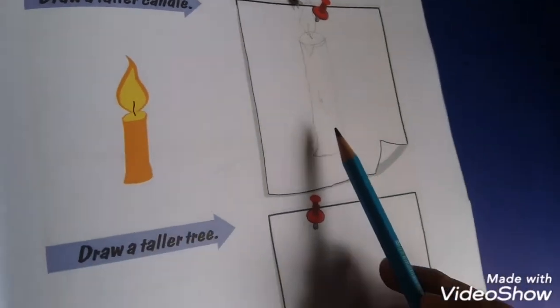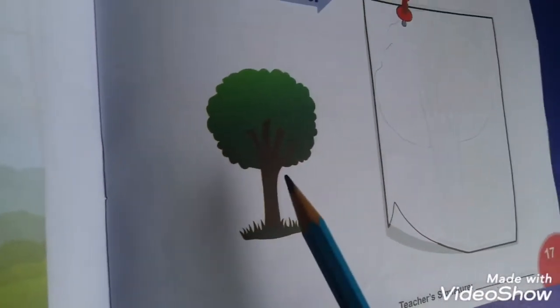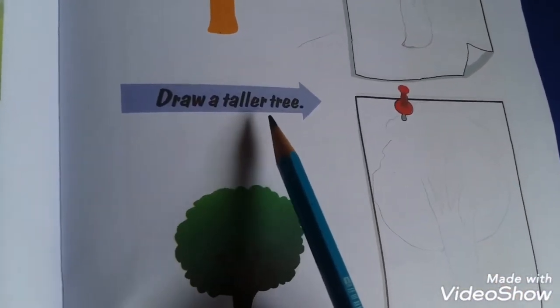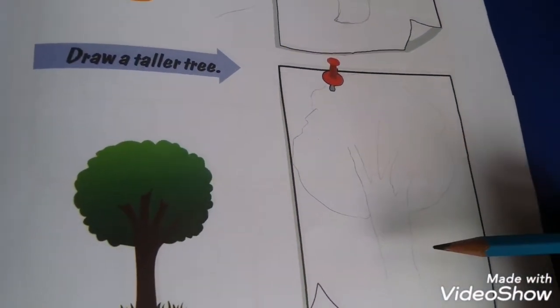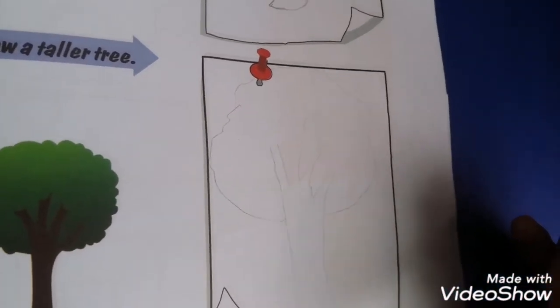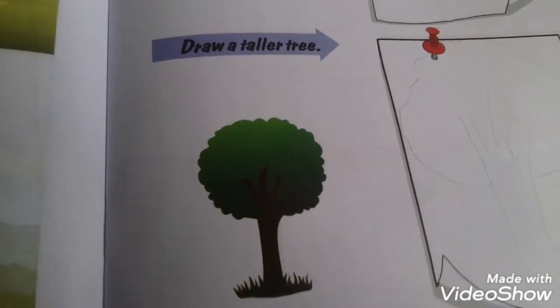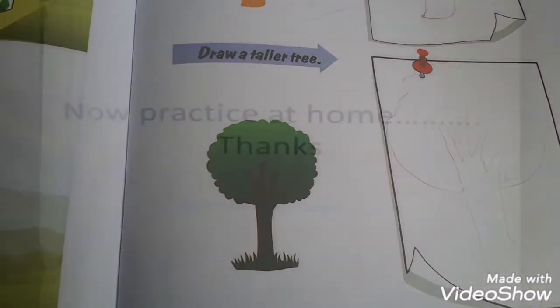This is a short tree, the shorter one. It's saying draw a taller tree. I draw a taller tree. You are looking in this picture, in this box - I draw a taller tree. Now you understand the concept of tall and short. Page number 17 completed.